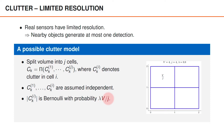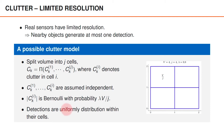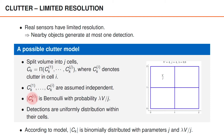The probability of getting a detection per cell is lambda — the expected number of detections per unit volume — times V divided by J, which is the volume of a single cell. In this particular example, V divided by J is 1, so lambda times V divided by J is 0.8. If a cell contains a clutter detection, the vector is uniformly distributed within that cell. Since the number of detections in individual cells is Bernoulli distributed, the total number of detections is binomially distributed with parameters J and V times lambda divided by J, giving an expected number of detections of simply V times lambda, which in our example is 3.2.